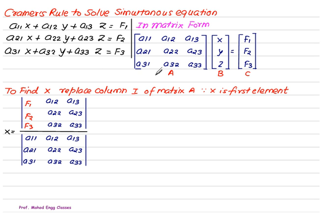Any equation in mathematical form can be written in these three forms, and once written in matrix form, we can apply Cramer's Rule. If we want to find x, which is the first element, we replace the first column of the coefficient matrix with the solution matrix [f1, f2, f3], keeping the remaining elements the same. Then x equals the determinant of this modified matrix divided by the determinant of the coefficient matrix A. Similarly, we can find y and z.